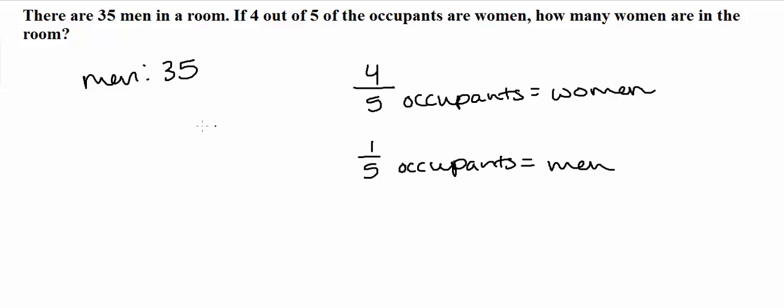So, using that information, we can set up a ratio. So the way to do that is 35 out of the total x occupants is equal to 1 over 5, because this is our ratio. There's 1 man to every total 5 occupants.